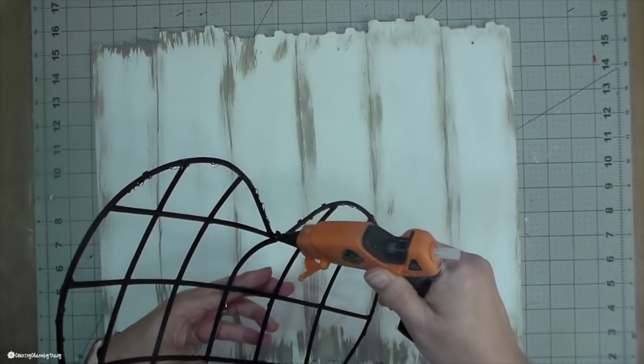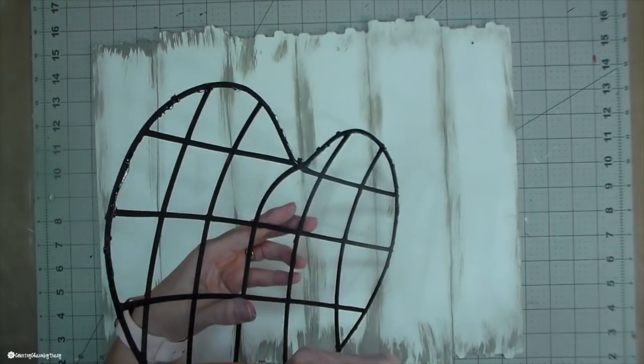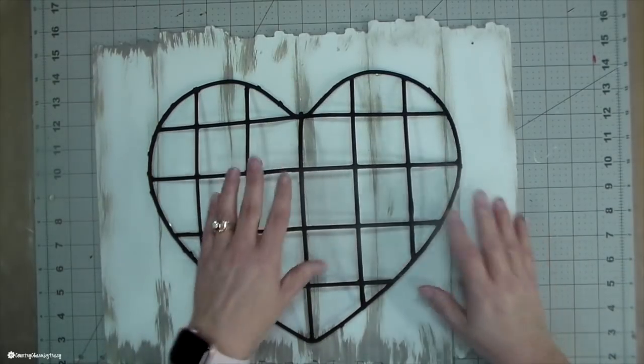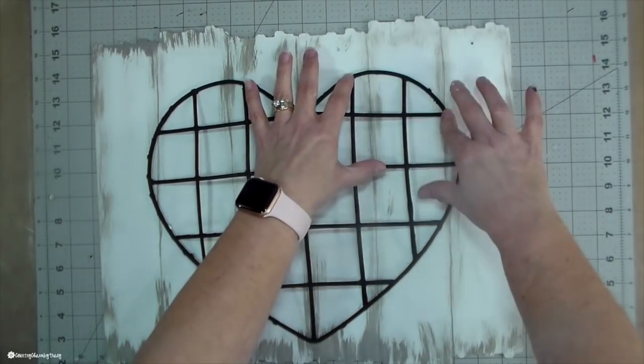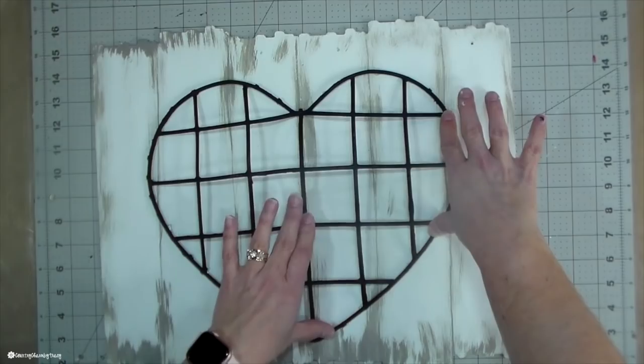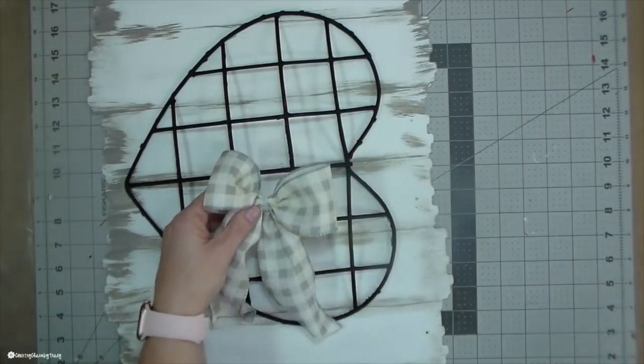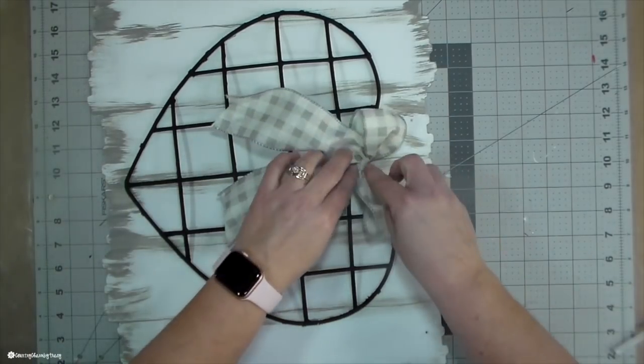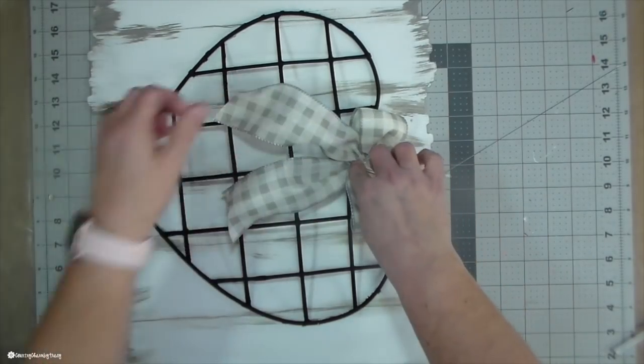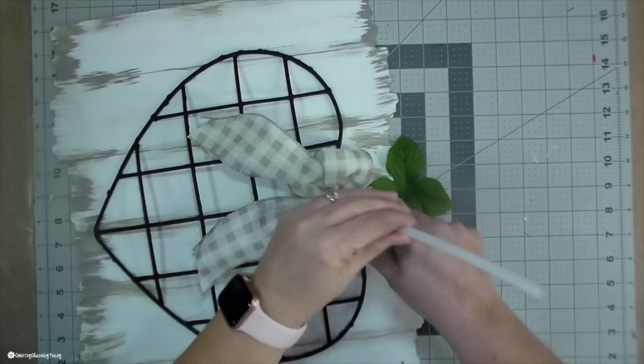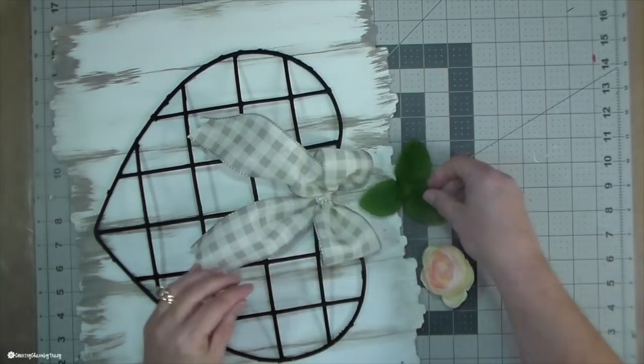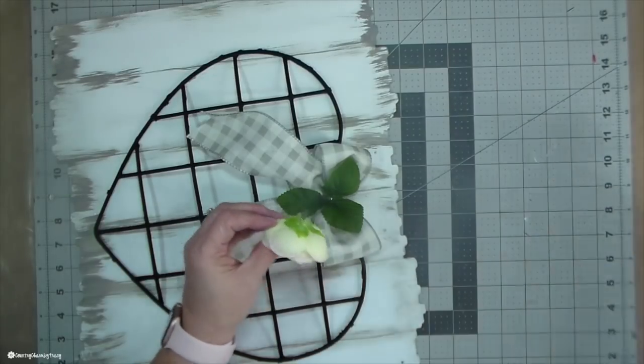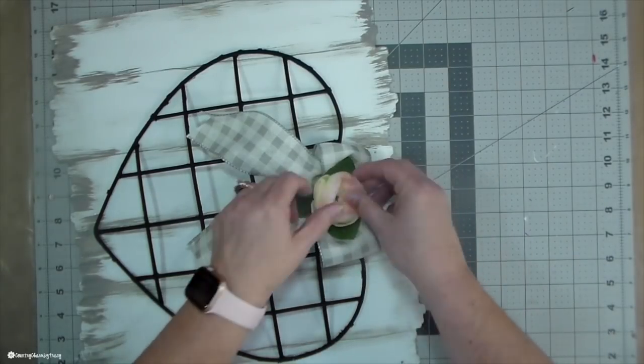I just hot glued it to the board and it sticks really well. I embellished it with a gray and white buffalo check ribbon that I made that I didn't use. It was on another project. I just made a two loop bow and ended up not using it. And so it's perfect for this little heart. I just hot glued it there in the middle and I added a flower to it. And I just think it looks so sweet.